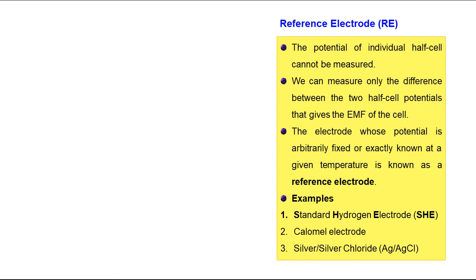First you have to know what is a reference electrode. The potential of an individual half cell cannot be measured. Just like you cannot clap with one hand, you have to use two hands simultaneously — similarly, we can measure only the difference between two half cell potentials, which gives the EMF of the cell. For example, if X is very tall it doesn't make sense, but if X is taller than Y, and you know Y is five feet, then X must be greater than five feet.